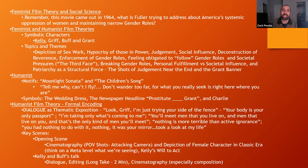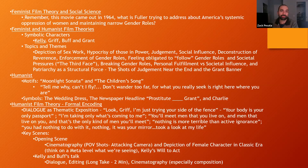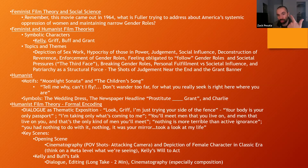Think about how Kelly feels obligated to tweak her persona and behavior depending on who she's interacting with, and the reason why. Other themes: breaking gender roles, shaking up narrow gender roles; personal fulfillment versus societal influence — doing what you want versus what society is pushing you to do; and patriarchy as a structural force. I don't want to spoil anything, but take note of Griff and Grant as symbols of this. There are a few key shots towards the final scene of the film — think about how those shots communicate the themes — and there's a symbol in literally the last shot of the film.